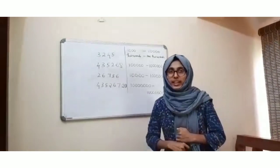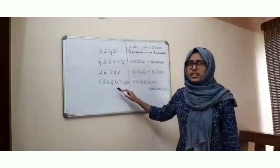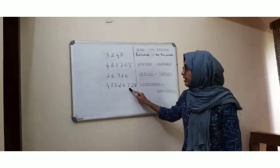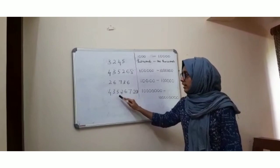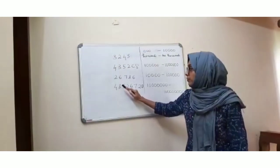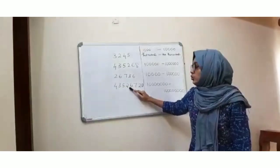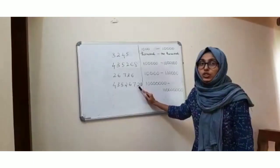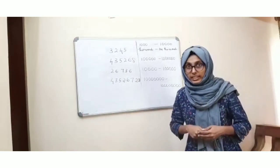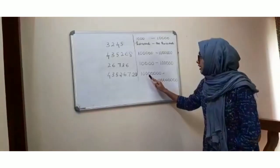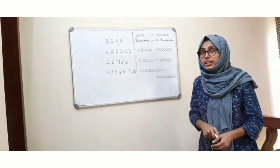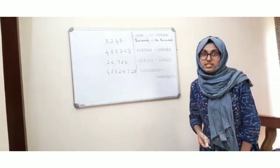So now another example. It will come between 1 crore and 10 crores. It will come between 1 crore and 10 crores. Is it clear now?